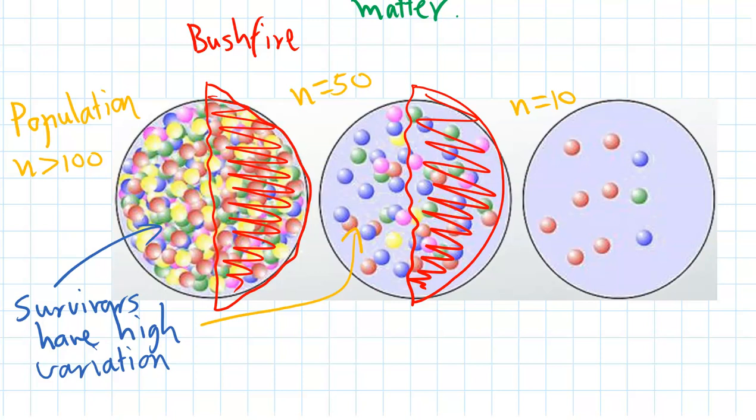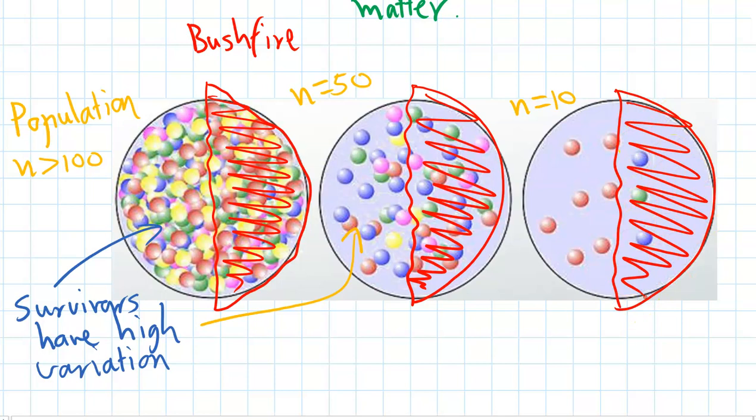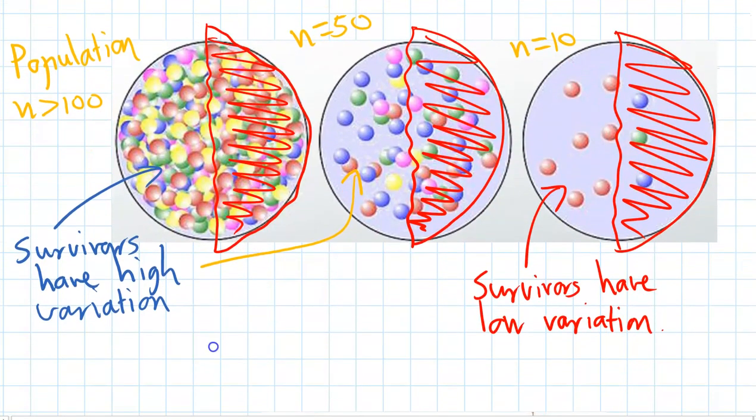But if we have a really small population like this one where there's only 10 individuals, if a bushfire comes through this area and just by pure chance, it's now killed off the only blue and green fur-colored individuals, the survivors suddenly are only red. They have a really low variation now, and actually they've got no variation because they're only red. You can see, the smaller the population, the greater effect that random chance has, and that random events can cause a big change on the population.